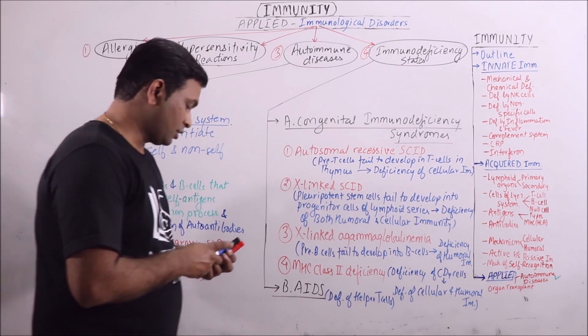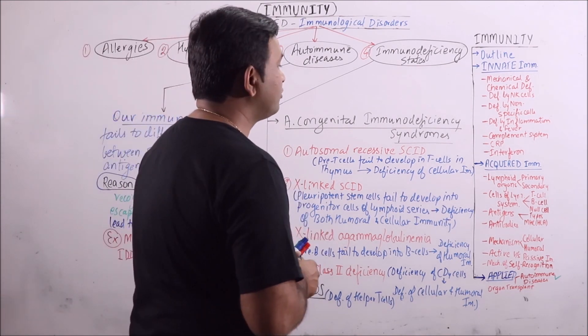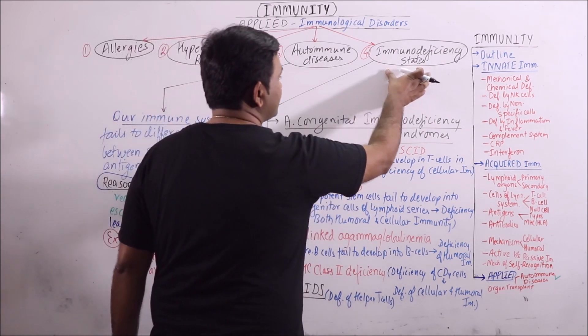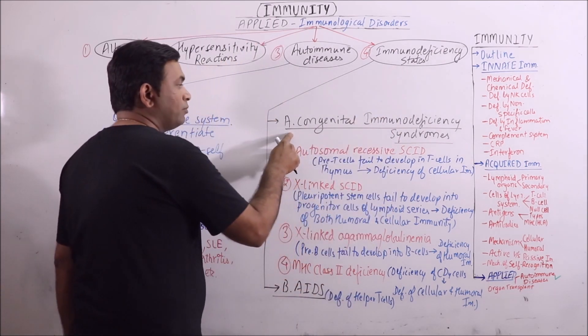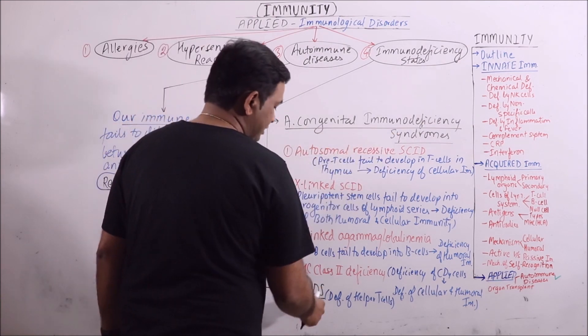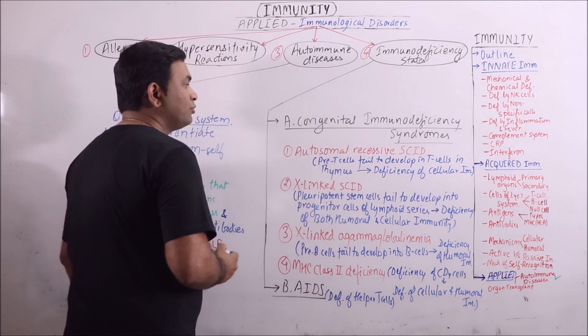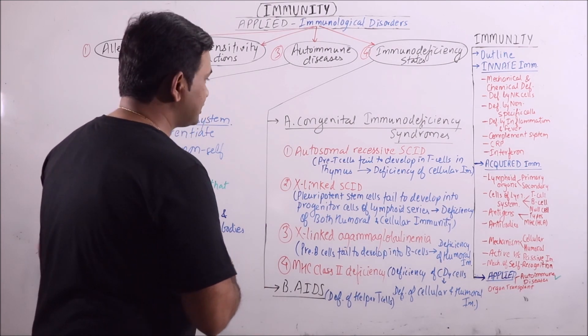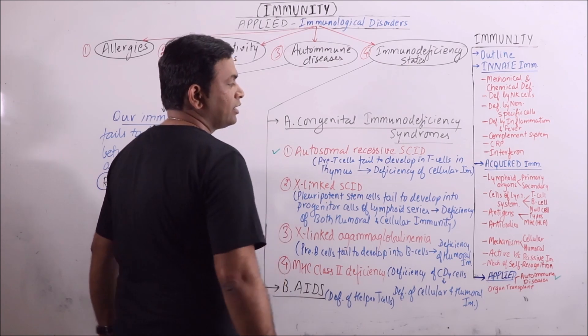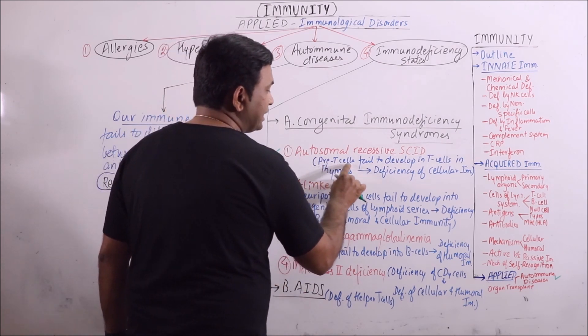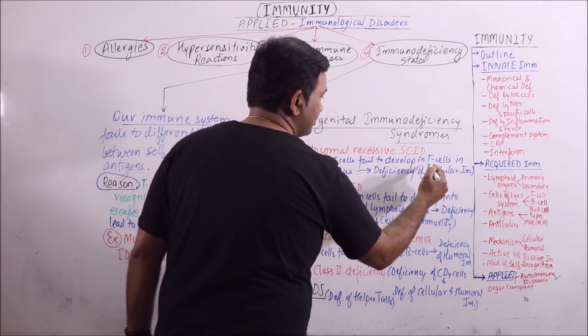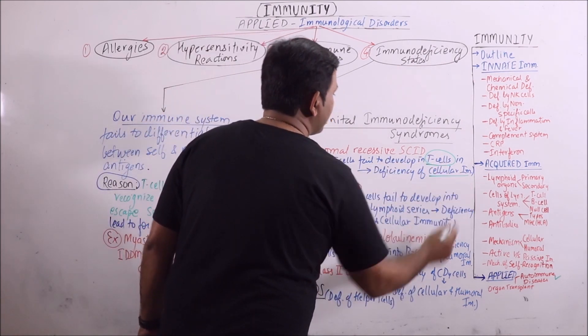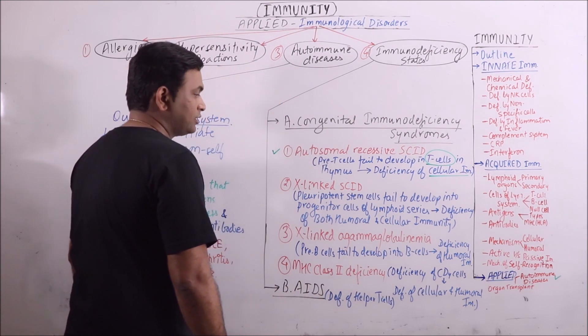Now the next is congenital immunodeficiency and acquired immunodeficiency. These are immunodeficiency states. By birth which are present are congenital and these are acquired. The types of congenital immunodeficiency syndromes are first autosomal recessive severe combined immunodeficiency. Here pre T cells fail to develop into T cells, so T cell deficiency is there and mainly cellular immunity is deficient.